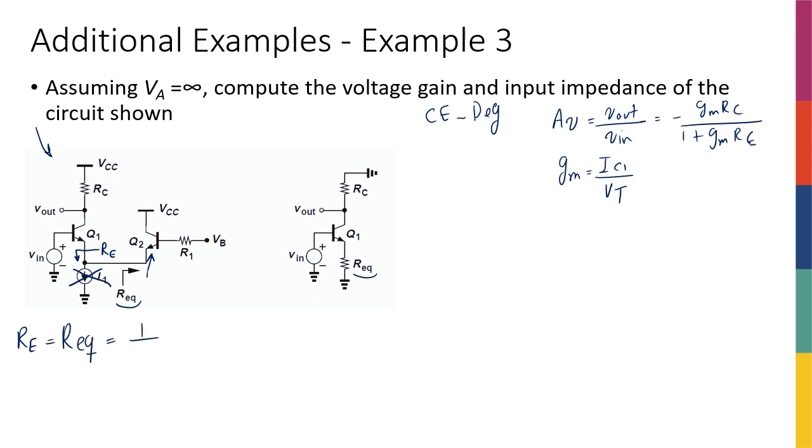So it's going to be REQ, which is, I know that looking into the emitter of a transistor I'm going to see 1 over GM2 plus whatever is in the base, which is R1 divided by beta plus 1.